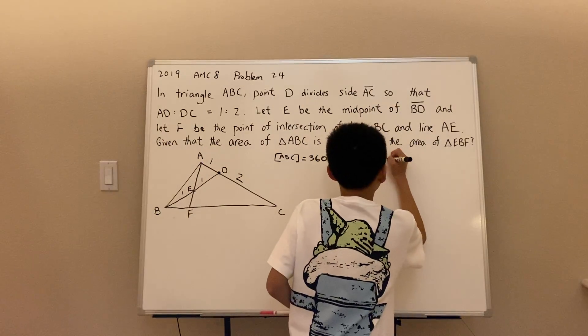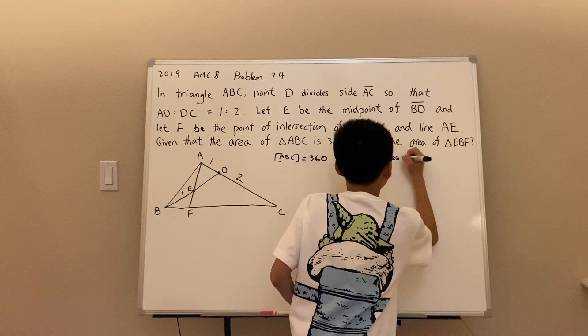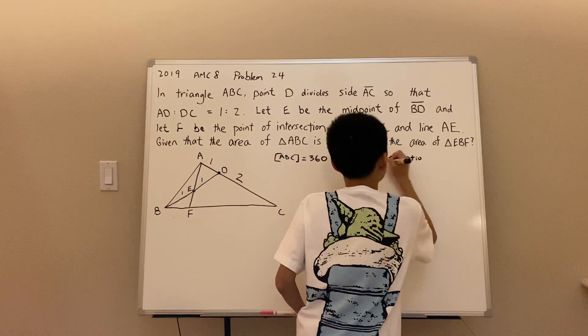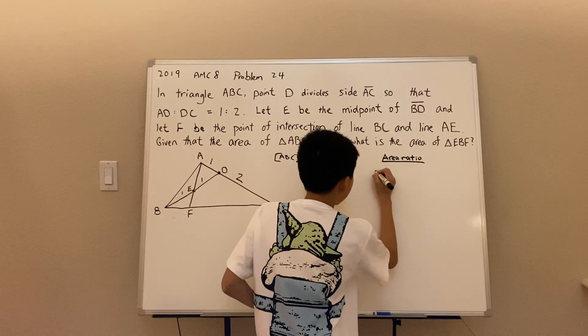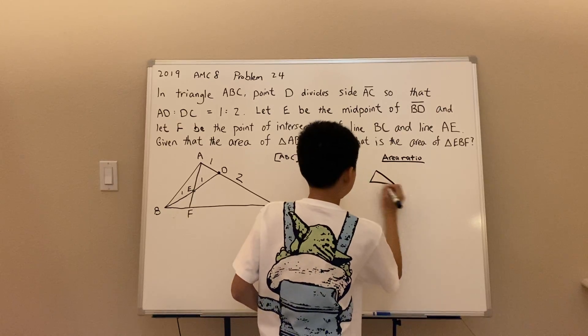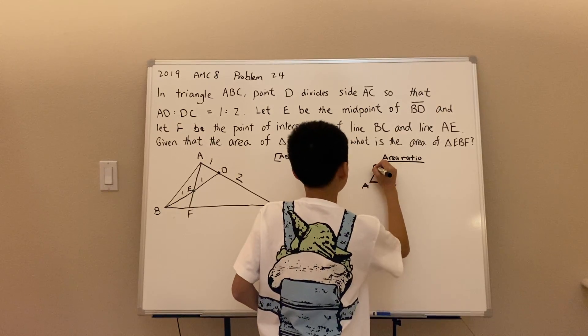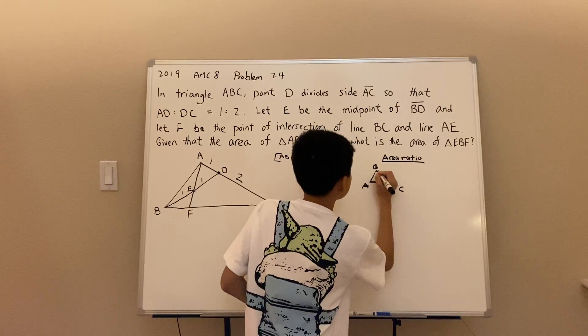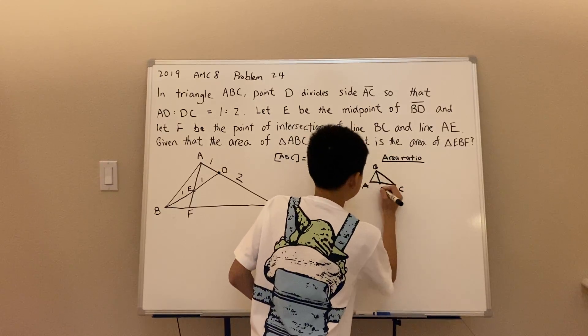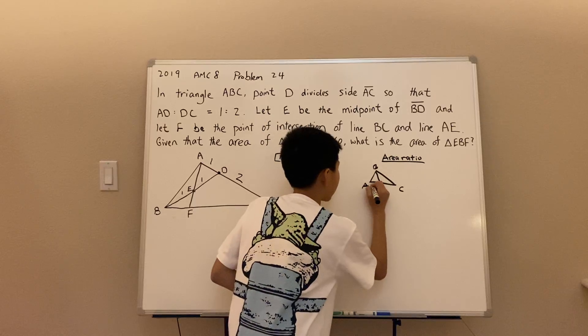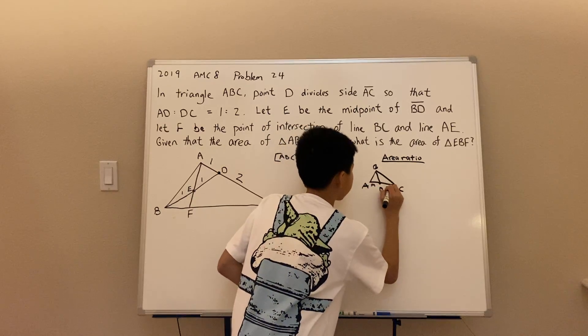So let's first talk about the area ratio theorem. Let's say we have a triangle with vertices A, B, and C. And we draw a line from B to AC and let the intersection be D. And if we let AD be M and DC be N,